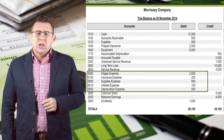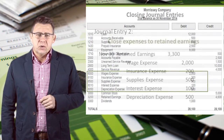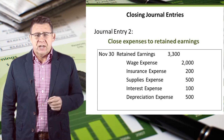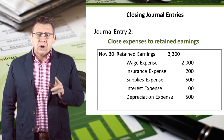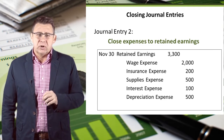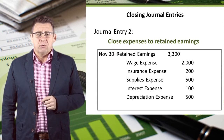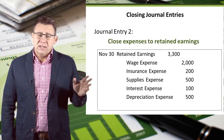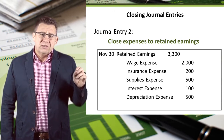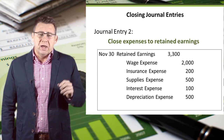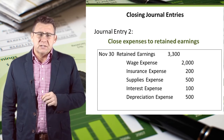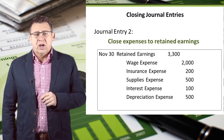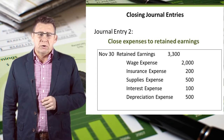Next, we will close expenses. The second journal entry is to close expenses to retained earnings. We record our expenses separately in the journal entry because each account needs to be zeroed out, as you can see in the example. Retained earnings is then debited for the total amount of the expenses. After posting this journal entry, all of our expenses will be zeroed out.